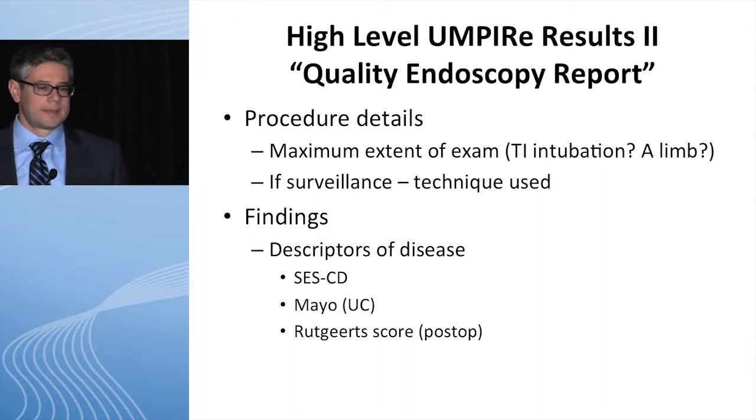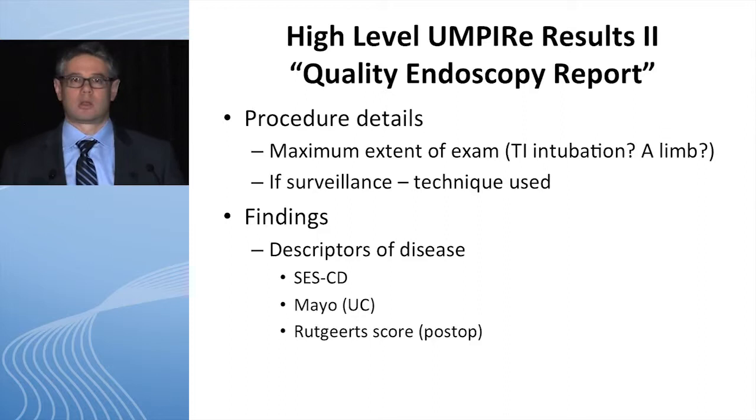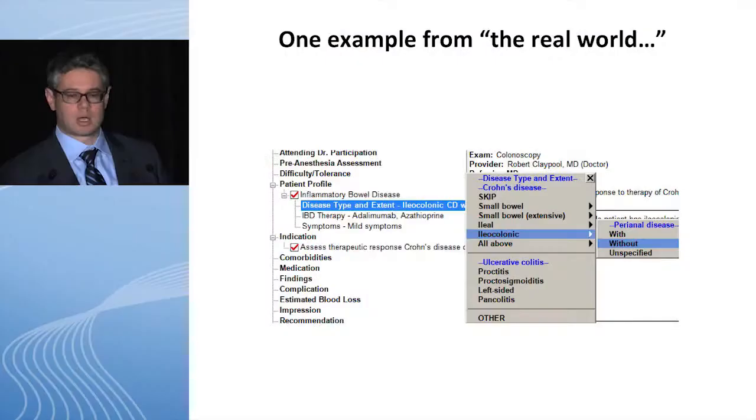Some high-level elements for procedure details: what was the maximum extent of examination? The colon was examined to the terminal ileum — but what does that mean? How far into the terminal ileum was actually reached? Did you get beyond the area of inflammation that might have been seen in the very distal terminal ileum or the afferent limb when it comes to a pouchoscopy? If a patient undergoes surveillance colonoscopy, what kind of technique was used — white light with multiple biopsies or chromoendoscopy? Then findings: descriptors of the disease, using some kind of standardized description so that somebody else reading your report can actually understand what the mucosa looked like.